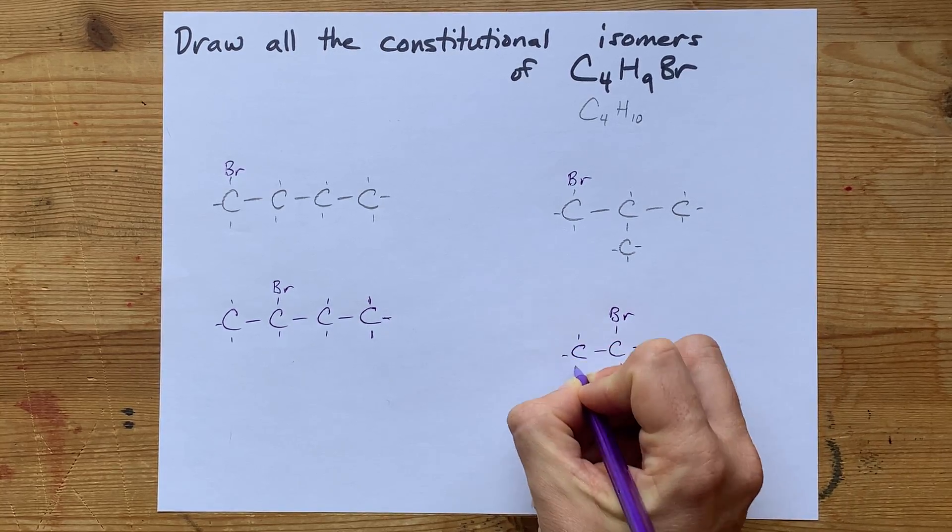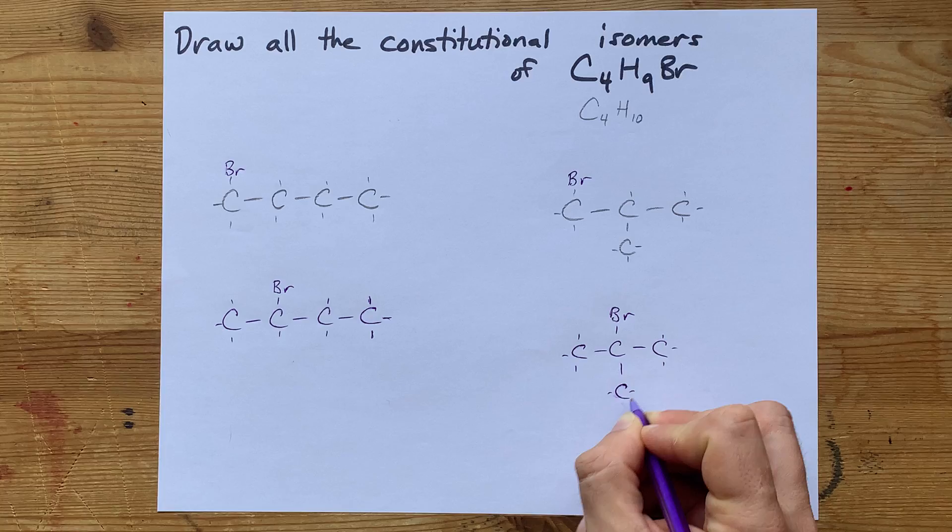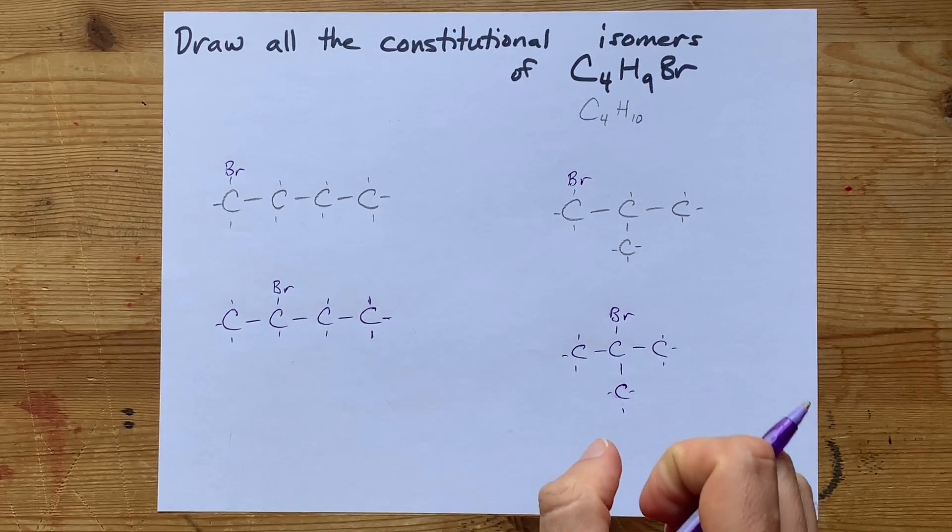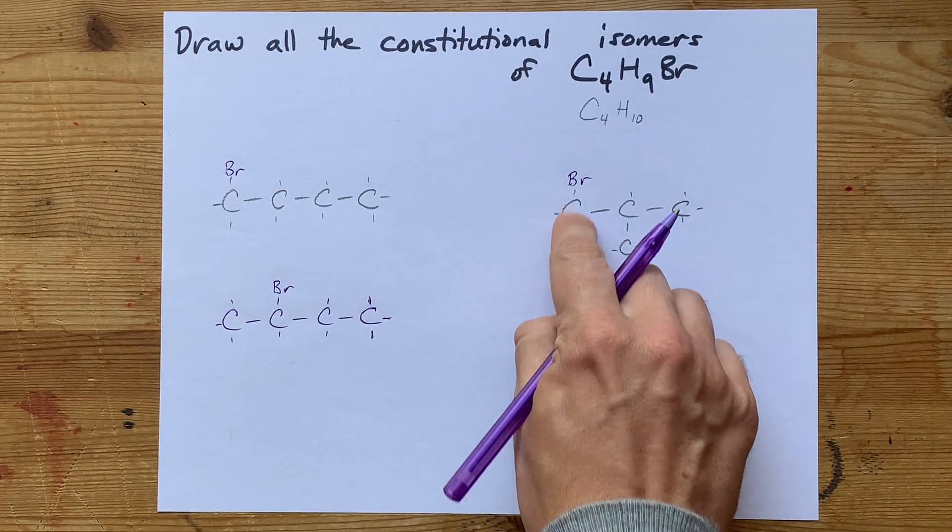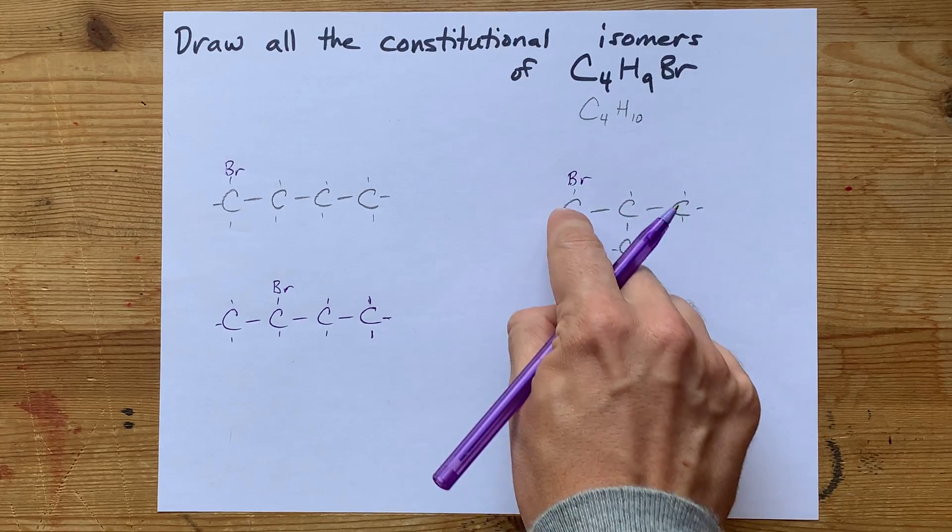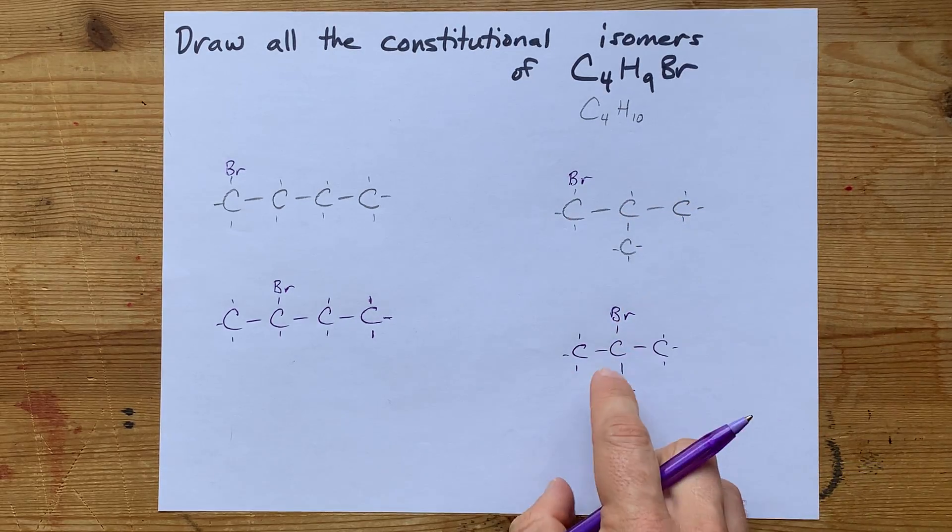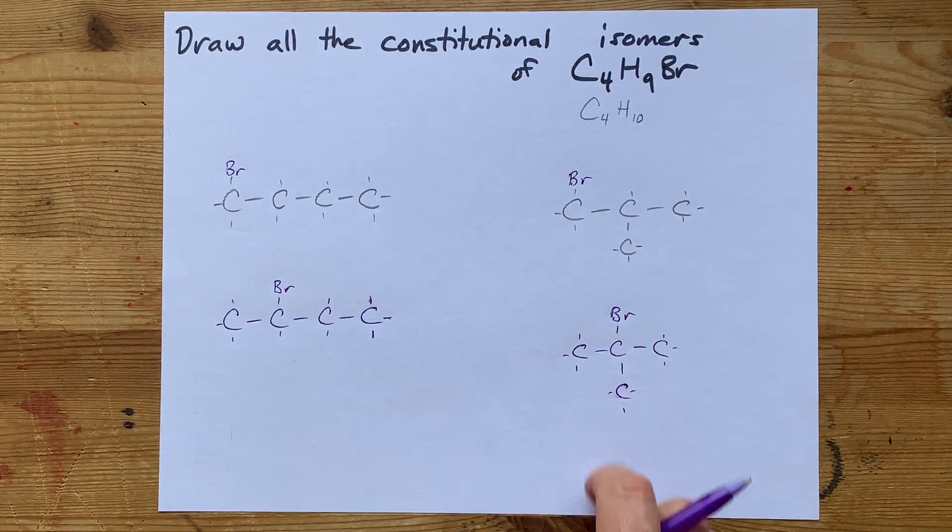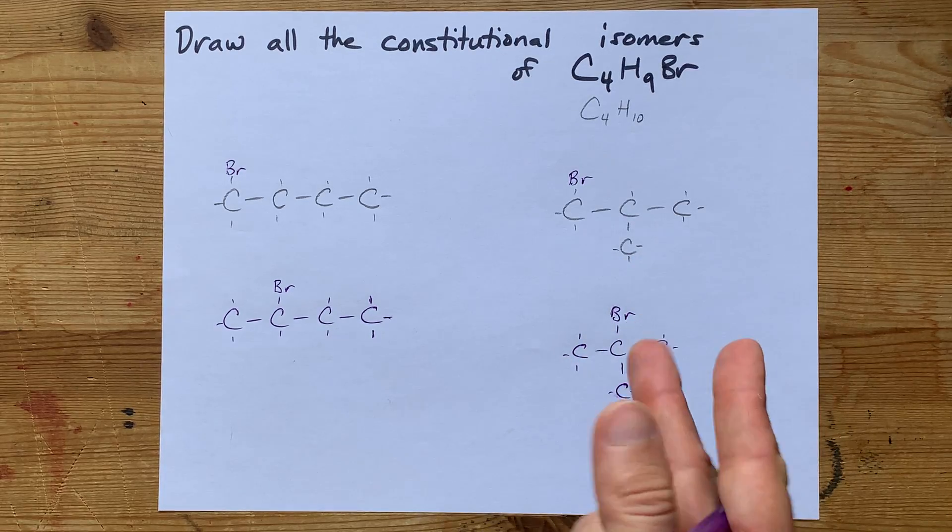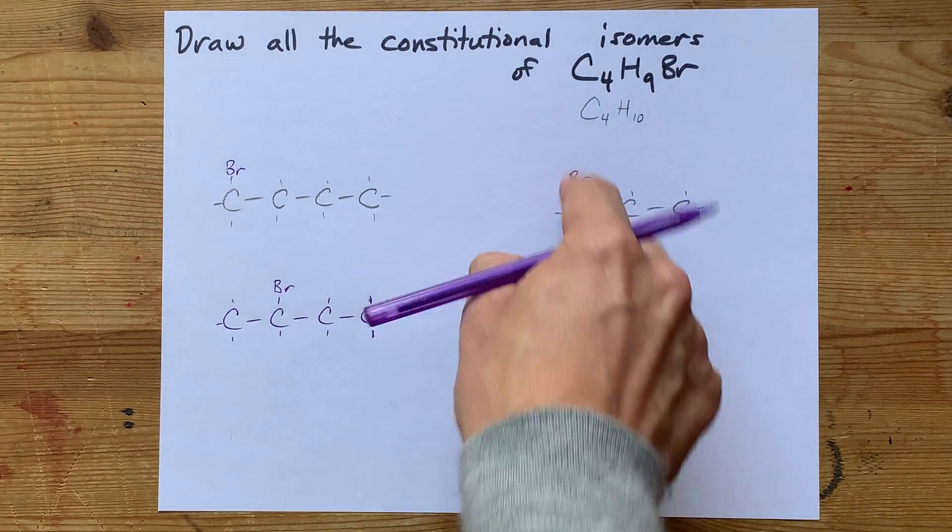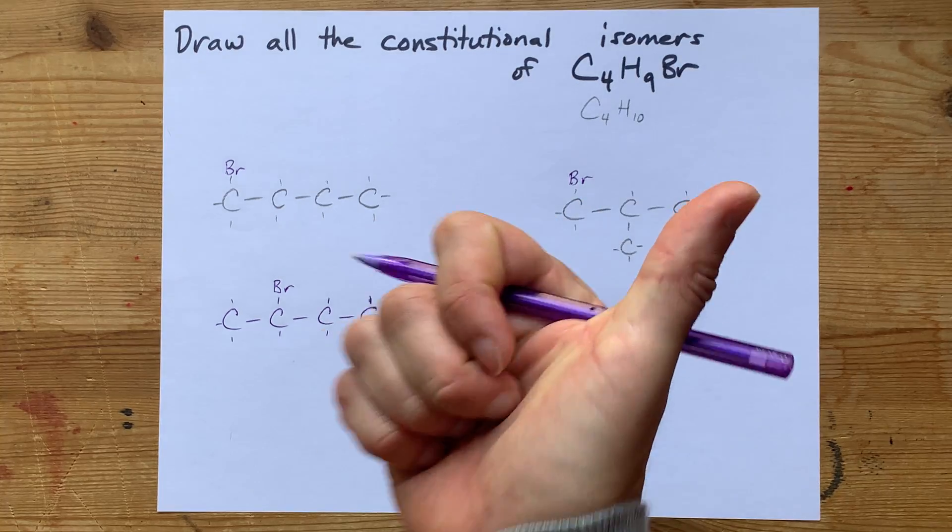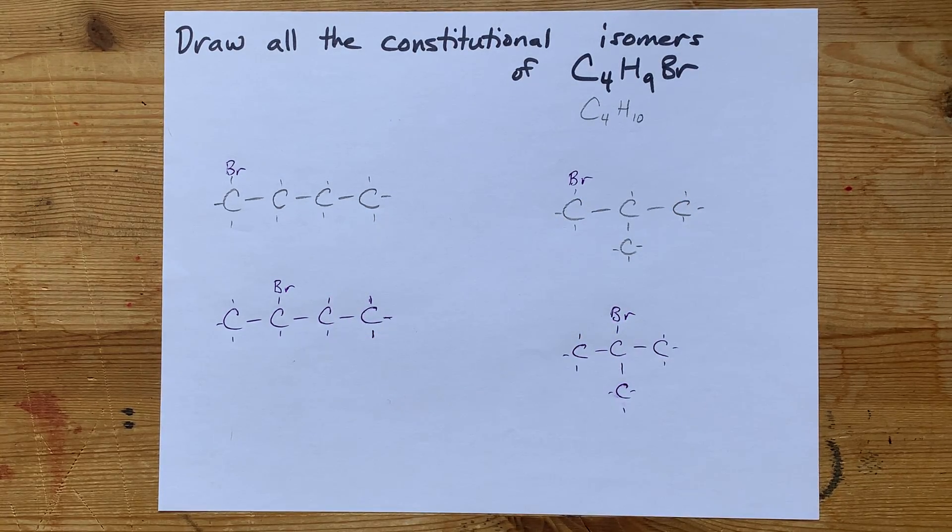The only way I can actually verify that is by trying to name them personally. This is 1-bromo-2-methylpropane. This one's 2-bromo-2-methylpropane. Because the numbers were different there, 1-bromo versus 2-bromo, I know I do have a different constitutional isomer.